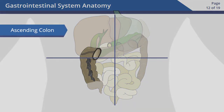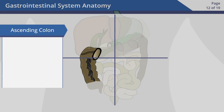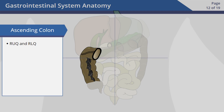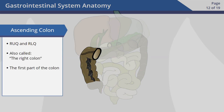The ascending colon is located between the cecum and the transverse colon in both the right upper quadrant and the right lower quadrant. Also called the right colon, the ascending colon is the first part of the colon. It accepts partially digested food from the small intestines.